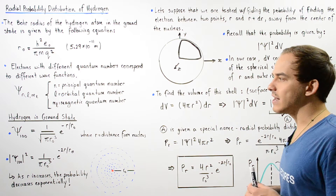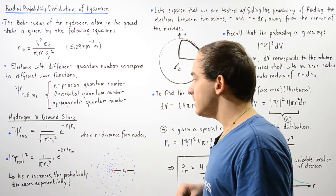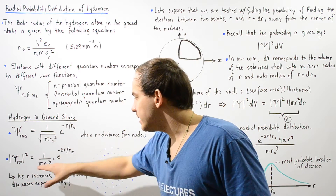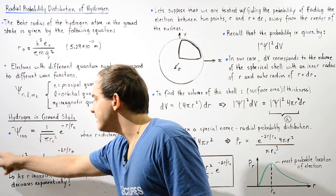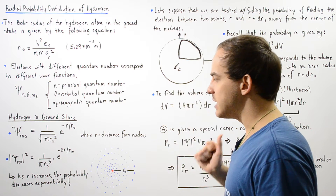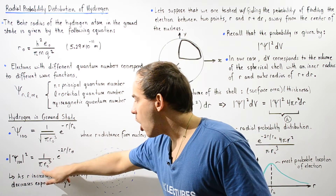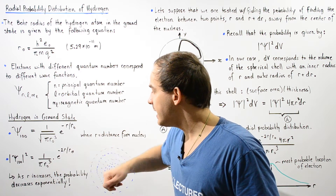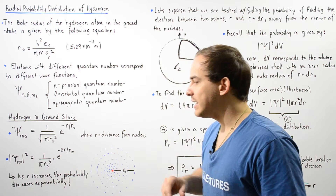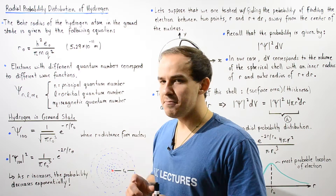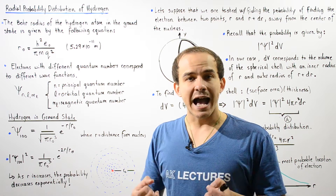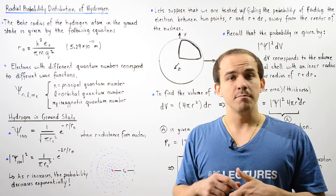To find the probability, we take the square of the absolute value of both sides of this equation, giving us the probability distribution of our electron around the nucleus of the ground state hydrogen atom. This equals 1 divided by pi r-naught cubed multiplied by e to the negative 2r divided by r-naught. This gives us the probability of finding our electron at some distance r away from the nucleus.